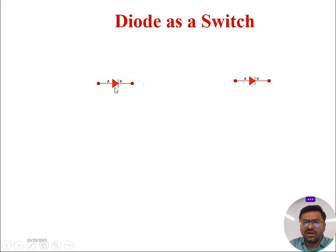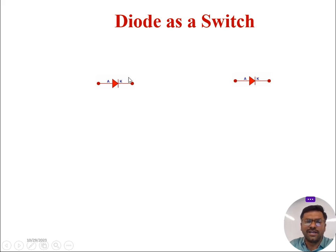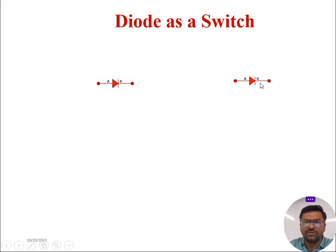Now, how to make a diode in forward bias and how to make a diode in reverse bias? Whenever anode potential is more than that of the cathode potential for an ideal diode, then diode goes in forward bias. Coming to reverse bias, whenever anode potential is less than the cathode potential for an ideal diode, then diode goes in reverse bias.